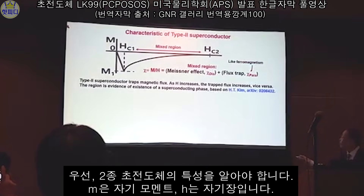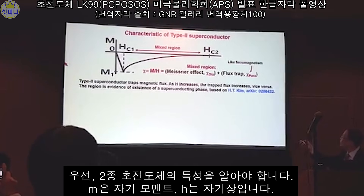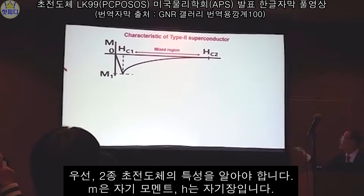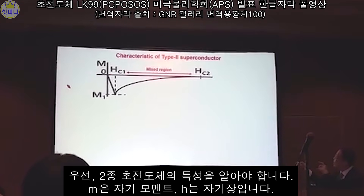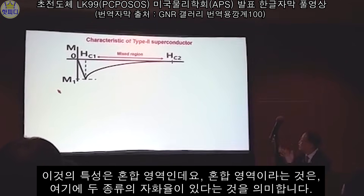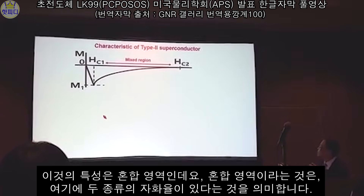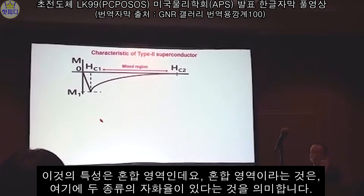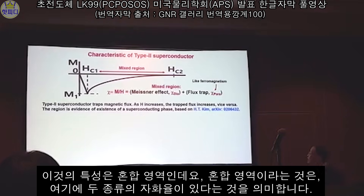First of all, we have to know the characteristics of a type-II superconductor. As you know, M is the magnetic moment, H is the magnetic field. The characteristic is the mixed region.